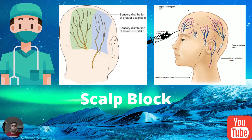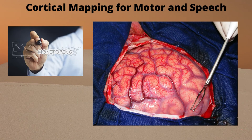The most important step in awake craniotomy is blocking the nerves which supply the skin over the head or scalp. This is called a scalp block. Since the brain doesn't have pain receptors and the bone covering the brain also doesn't cause pain, if we make sure that the skin over the head is anesthetized by a good scalp block, the patient will not have any kind of pain during the procedure.